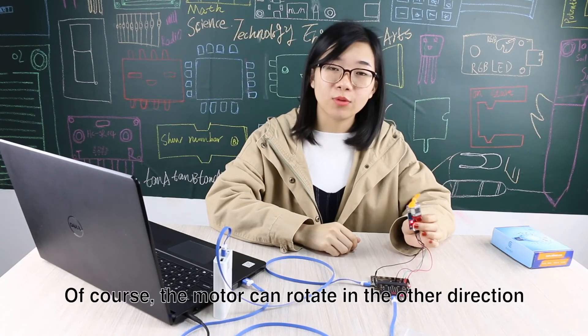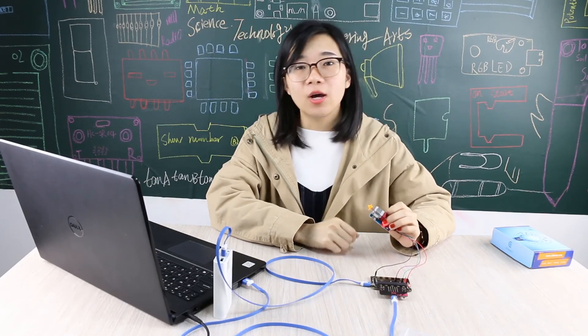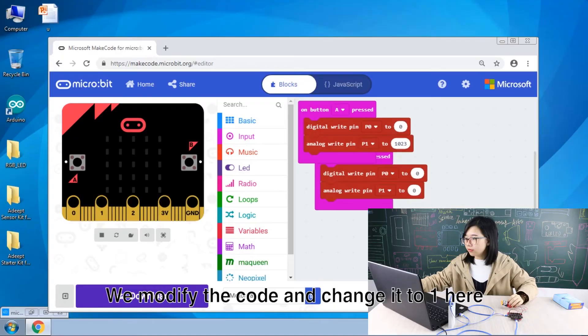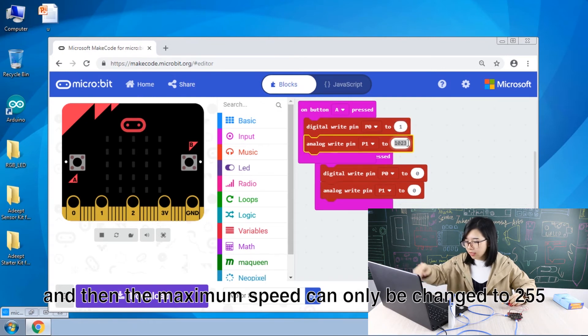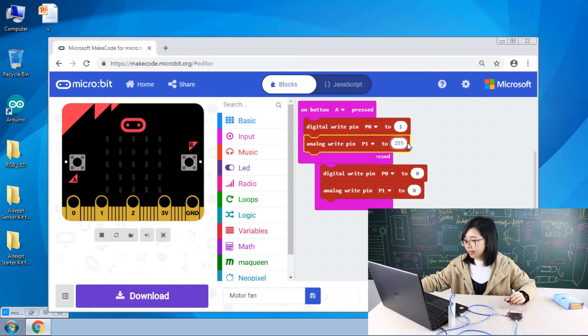Of course, the motor can rotate in the other direction. We modify the code and change it to 1 PWM. And then the maximum speed can only be changed to 255. Download the code.